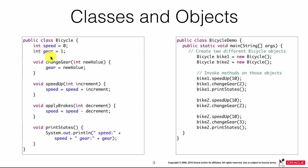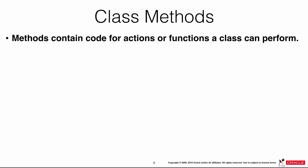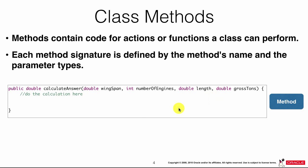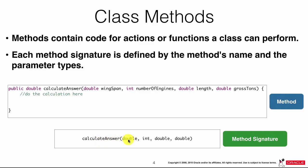About class methods: they are functions inside classes containing code or actions that a class can perform. Each method has a signature, defined by the method name and the parameter types — the return value is not included in the method signature. For example, a method `calculateAnswer` that returns a double and takes parameters `double wingSpan`, `int numberOfEngines`, `double length`, and `double grossTons` — the signature is the method name and those parameter types.